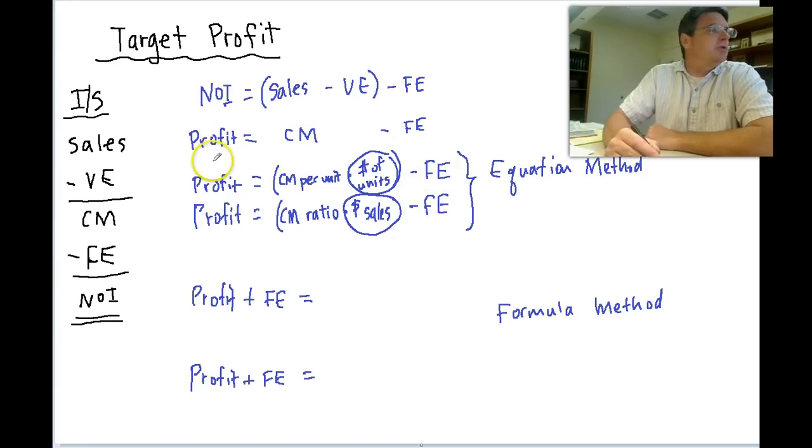So now our fixed expenses moved over. Again we only want to leave these two terms on the right side of the equals. We want to move contribution margin per unit over. So how do we do that? Well here it's multiplied. So we need to divide by contribution margin per unit.